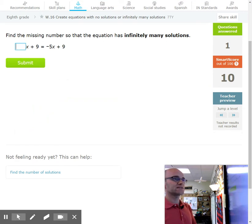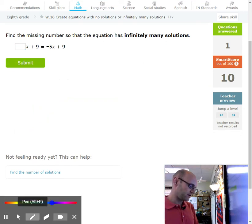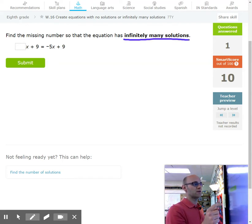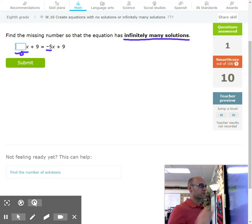In this problem, it says find the missing number so that they have an infinite number of solutions. Infinitely many solutions means that no matter what I plug in, it's always working. So that means that they're exactly the same. So if they have negative 5 X's, we should have negative 5 X's. Let's plug in negative 5 and try another problem.